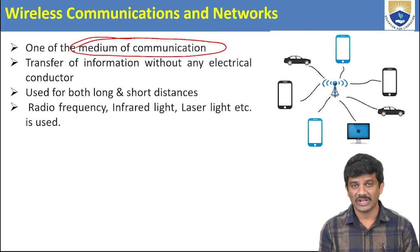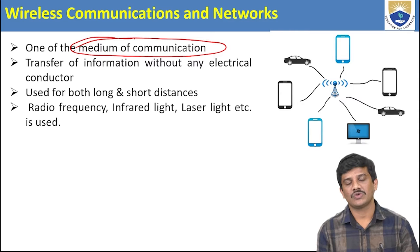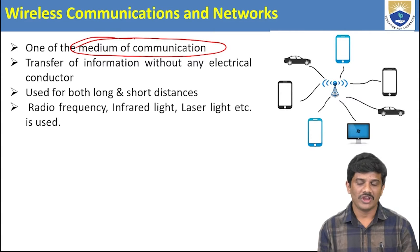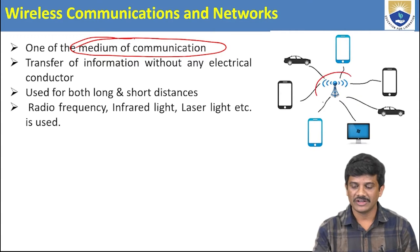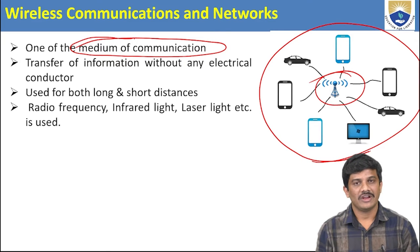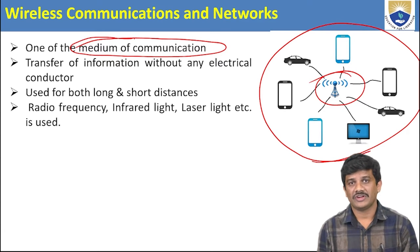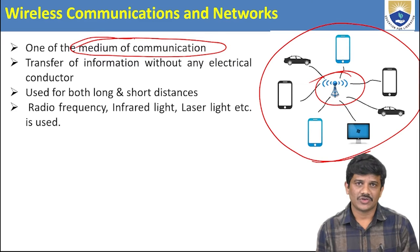We can transfer information without any electrical conductor — that means without wires. Without any electric conductors, we can transfer information from one source to another destination. This wireless network enables connection between devices. It is used for both long and short distances; based on the frequency we use, we can connect devices at either long or short distance.